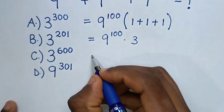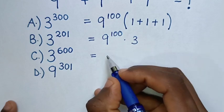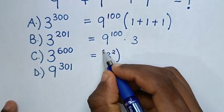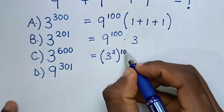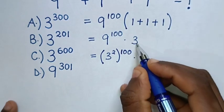Then it will be equal to 9 is same as 3 square, then bracket power of 100, then times 3.